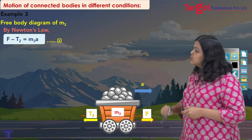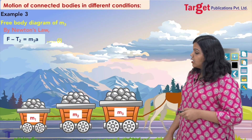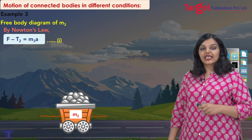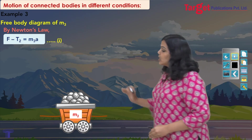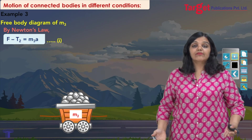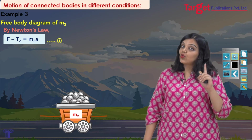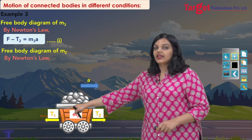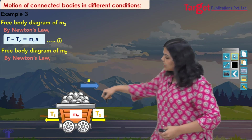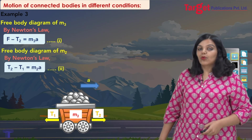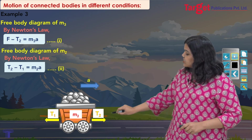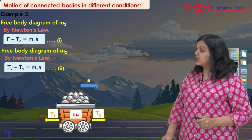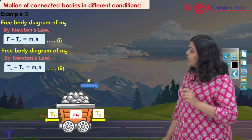Moving to object m2: looking at the free body diagram, m2 is between the two strings, so the only forces acting on m2 are the tensions from each string. These tensions are not the same — T2 acts to the right and T1 acts to the left. Tension always acts away from the body. Applying Newton's law: T2 minus T1 equals m2a. T2 is positive (acts right), T1 is negative (acts left), and m2a is positive (moves right). This is my second equation.